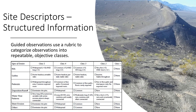Structured site descriptors can also take the form of guided observations. For example, is there evidence of erosion, grazing, fire, or disturbance at the site? If so, a rubric can help categorize these observations into consistent classes in a repeatable way to create data that could be used for analysis.